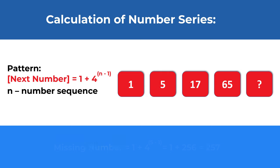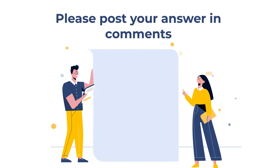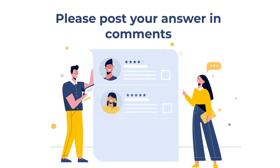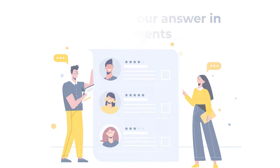And the missing number is calculated as 1 plus 4 to the power of (5 minus 1), which equals 1 plus 256, which equals 257. So the correct choice here is Choice B, 257. Hopefully you've nailed this question and now know how to solve similar problems on the test.